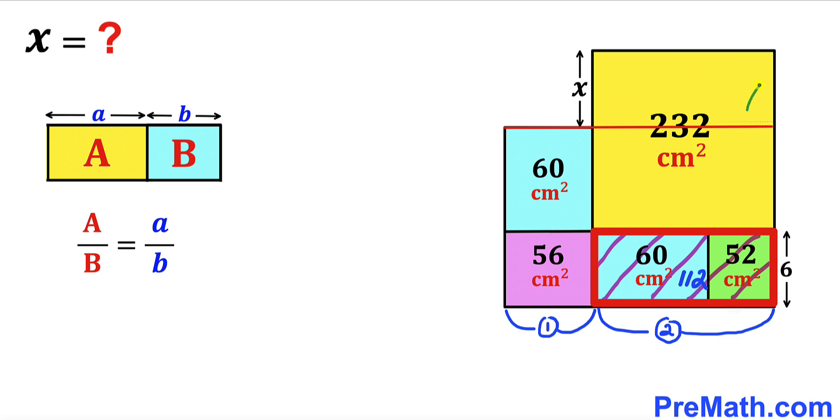I have divided this yellow rectangle into two parts by drawing this red horizontal line as you can see and we can see that this side length is the same as this side length. So therefore the ratio of this side length to this one is going to be twice of that one.